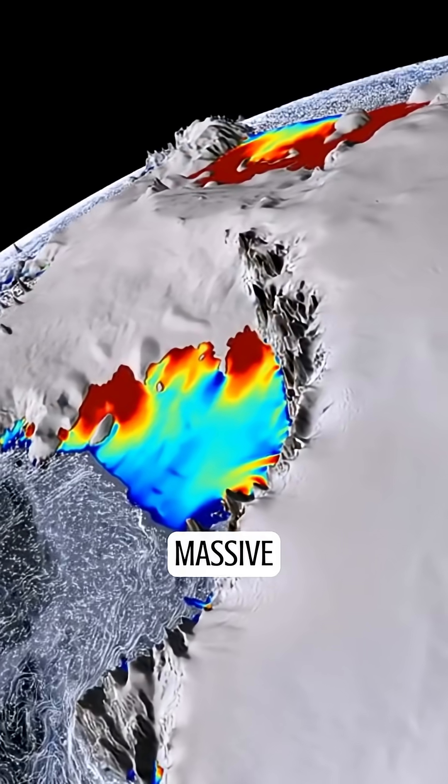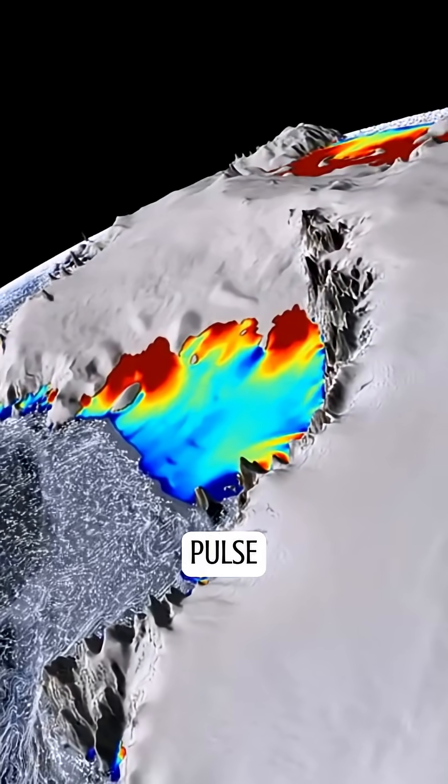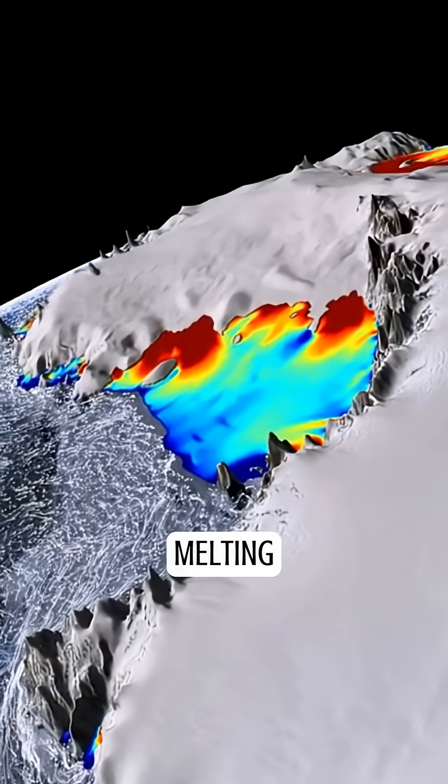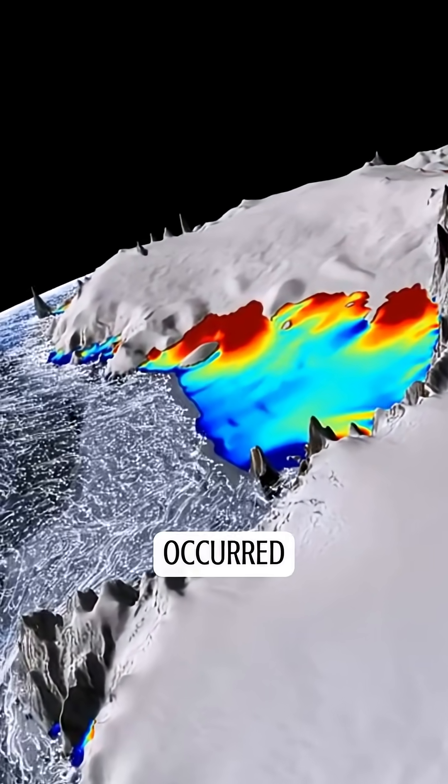The catastrophe at 11,600 years ago is still kind of undefined. There's been no evidence, to my knowledge, of any kind of extraterrestrial impact. However, there was a massive pulse of melting that occurred, and it's referred to as Meltwater Pulse 1B.